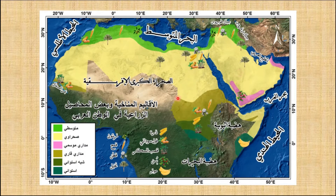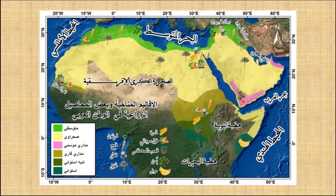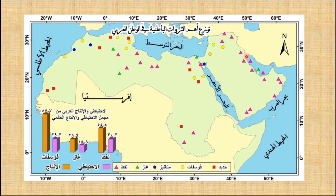لدينا خريطة تبين الأقاليم المناخية وبعض المحاصيل الزراعية في الوطن العربي: السودان يستطيع زراعة الذرة والفول السوداني وقصب السكر، والمناخ المتوسطي تنمو فيه أشجار الزيتون والقمح والقطن، والمناخ الموسمي ينمو فيه البن، والمناخ الصحراوي تنمو فيه أشجار النخيل. مما يعني أن الوطن العربي لديه تنوع شديد في الزراعات. وللوطن العربي إمكانيات ضخمة من جهة الثروات الباطنية كالحديد والفوسفات والمنغنيز والغاز والنفط.